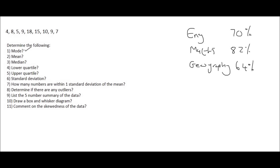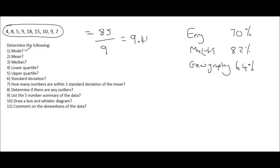The same with these numbers — you would add all of them together which gives us 85, and then you would divide by the total number of numbers that you can see. In this example we have nine numbers, so you say 85 divided by 9, and that's going to give us an average of 9.44.